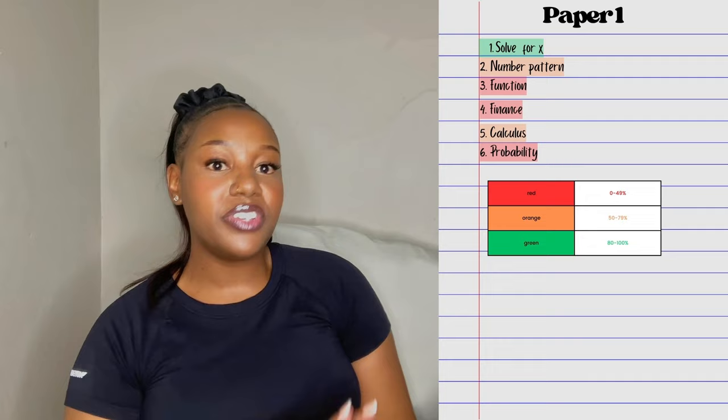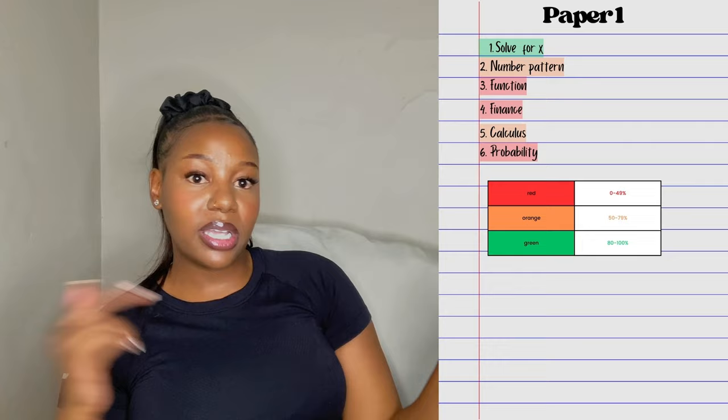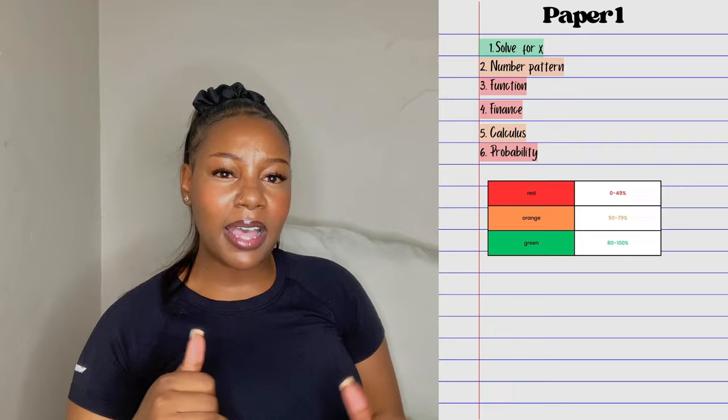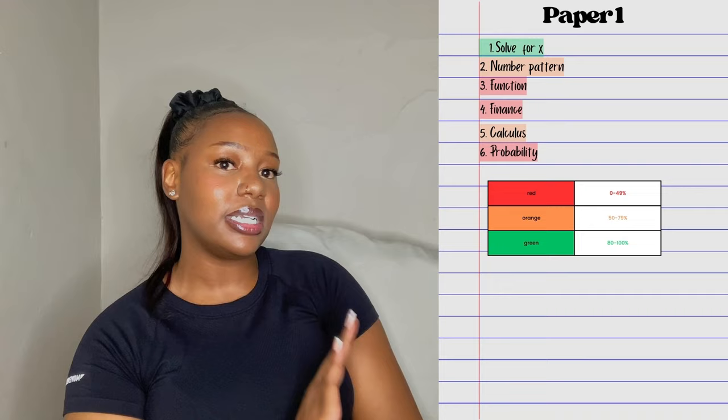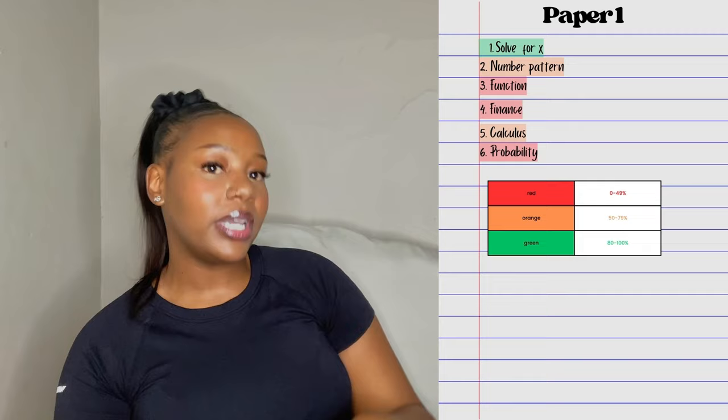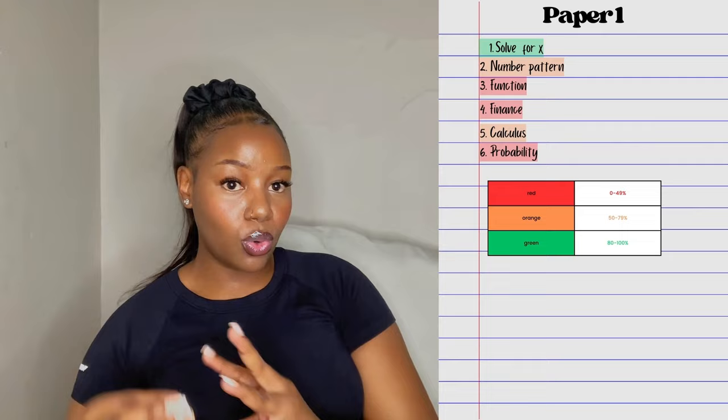Write the paper and score yourself per section. For example, let's say for algebra x you get around 80 percent — that's green. For number patterns, maybe you get around 60 to 65 percent — I'd consider that orange. For functions, if you score around 30 to 40 percent, I'd consider that red. Do this for each and every topic, then take your highlighters and list down all the topics for paper one after scoring yourself.